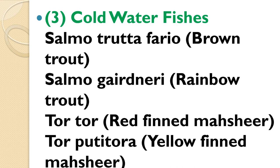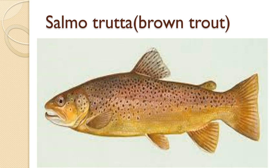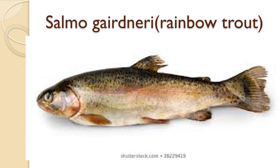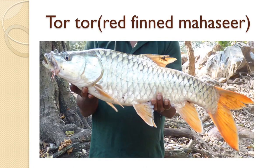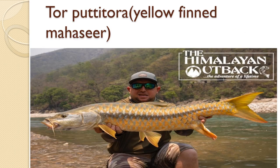Cold water fishes used for culture: Salmo trutta (Brown Trout), Salmo gairdneri (Rainbow Trout), Tor tor (Red Finned Mahseer), and Tor putitora (Yellow Finned Mahseer).